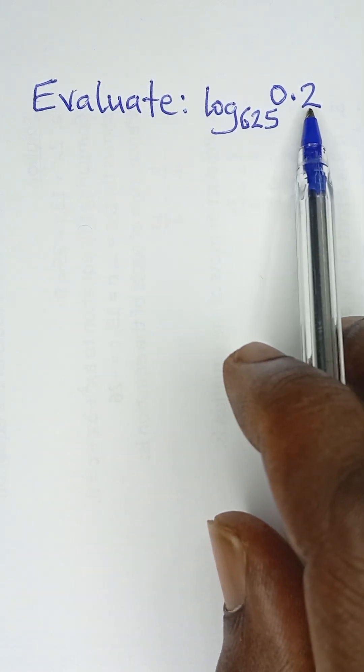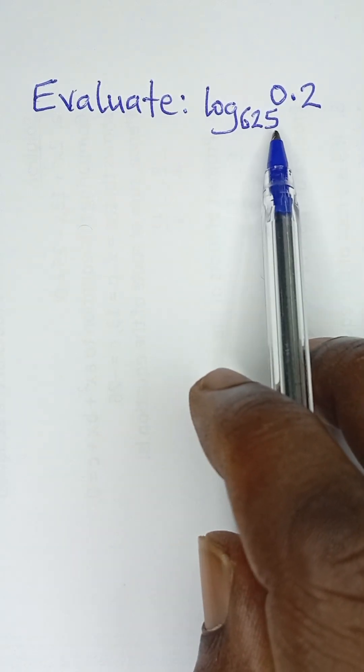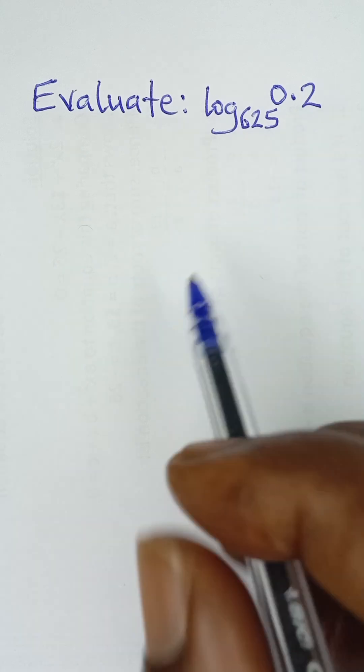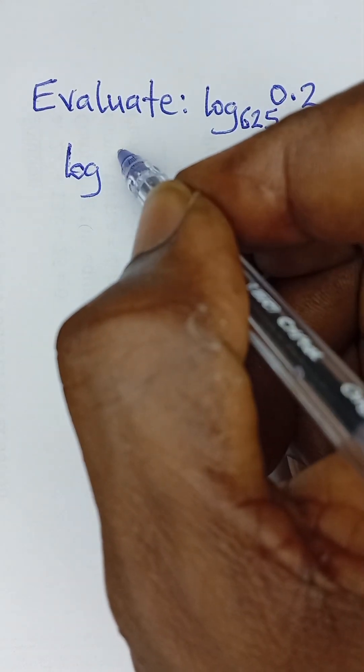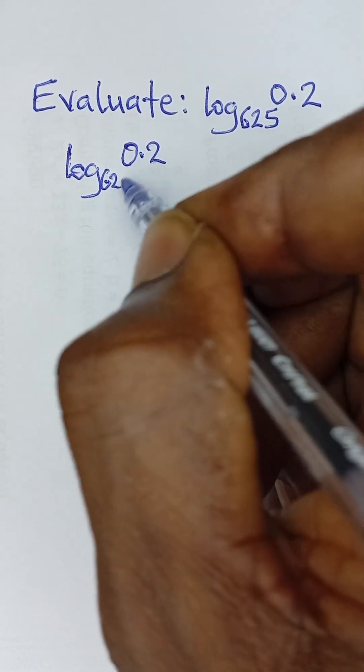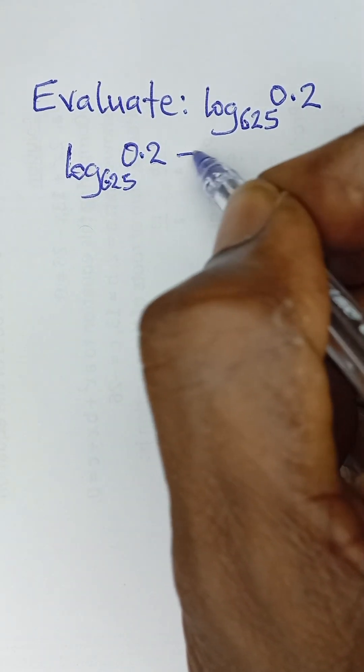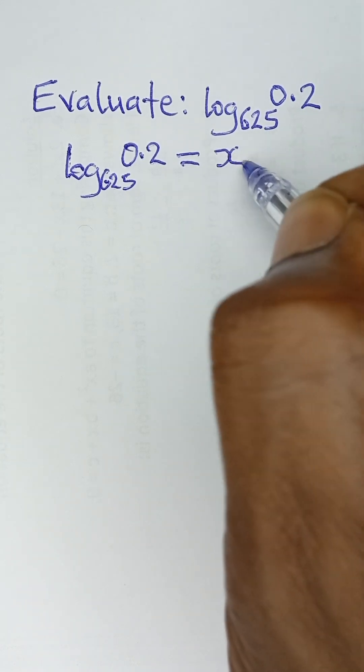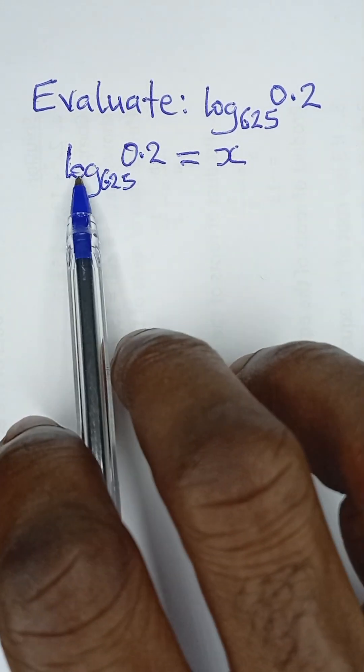Evaluate log 0.2 to the base 625. Now let's take the logarithm of this 0.2 to the base 625 to be equal to x. Let's take our answer to be equal to x.